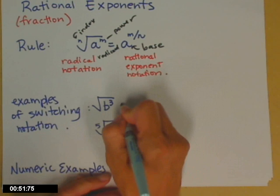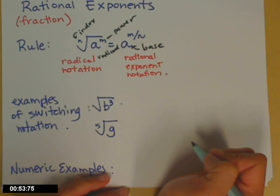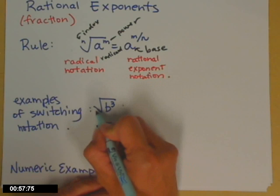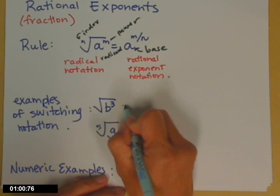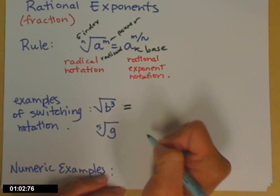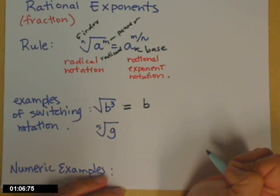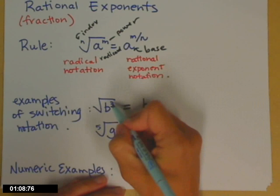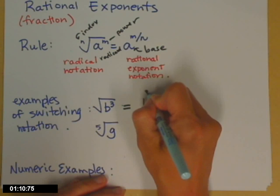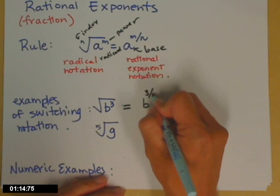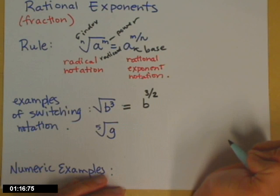So one of the things you'll be asked to do is just to switch between the two notations. Do you understand what pieces go where? So if I look at the square root of b cubed, to write that in a rational exponent notation, b is my base and its power, that three, is the numerator and the denominator is the index. And remember, if the index isn't written, it's an understood two.